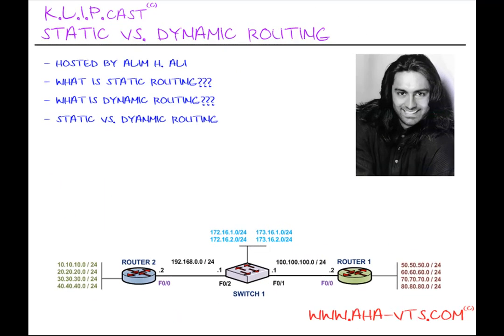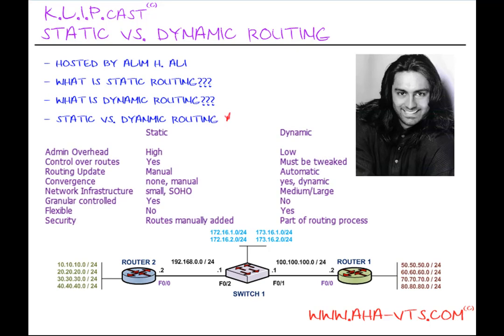When deciding how to route on a network, we need to understand the difference between static and dynamic routing and the pros and cons. If we want more control of our routing capabilities, we will choose static routing. If we want the routing processes to learn the routes on their own, we will choose dynamic routing. If we're dealing with a small enterprise or small office home office, more than likely we will choose static routing. However, if we're in a medium to large enterprise, we will go with a dynamic routing protocol.